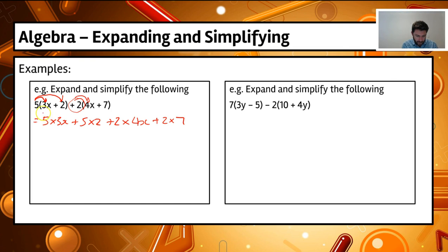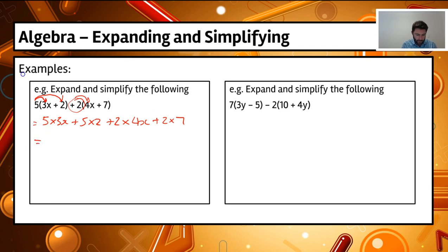This was our first little expansion, and this one was our second. We're not multiplying those, so those brackets don't need to be there. Now we're going to multiply them out: 15x plus 10. Then we've got plus 8x — 2 times 4x gives me plus 8x — and then plus 14.